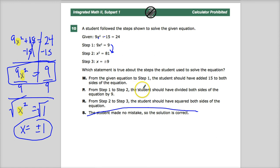So from step 1 to step 2, the student should have divided both sides of the equation by 9. What they did instead was eliminate multiplying by multiplying. That never works. So the answer to 10 is P.